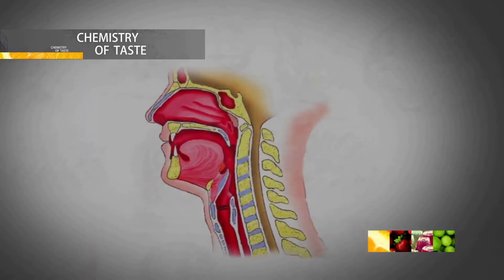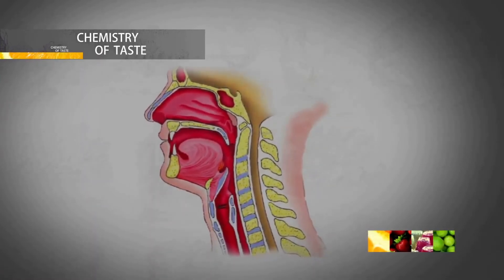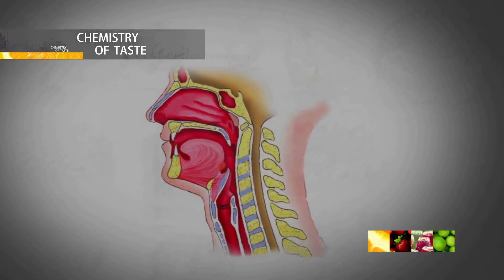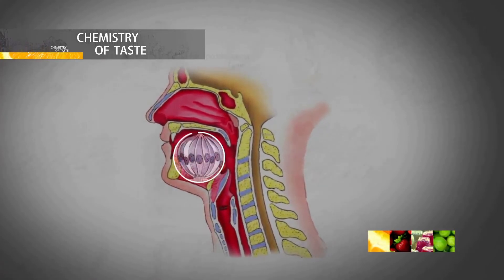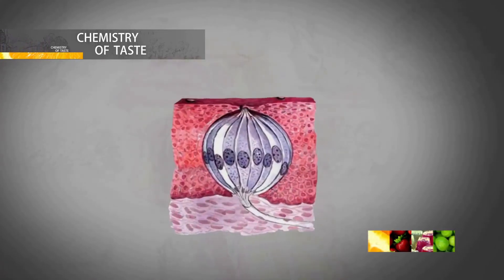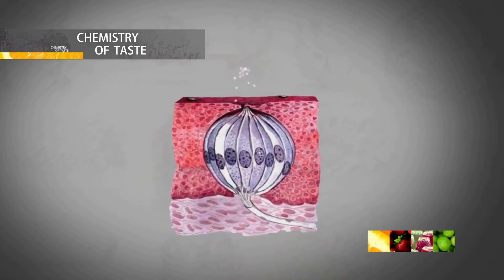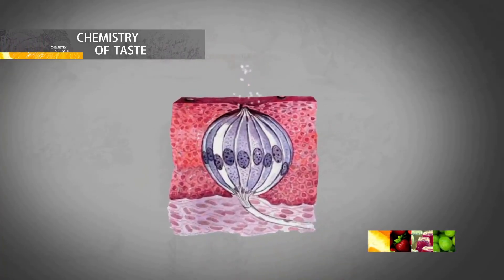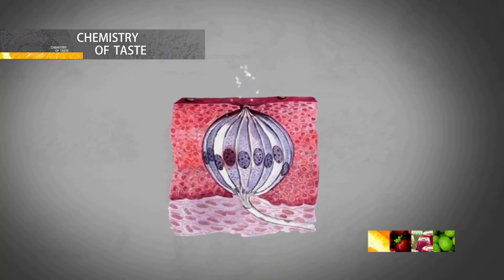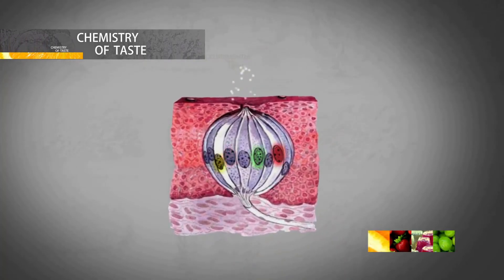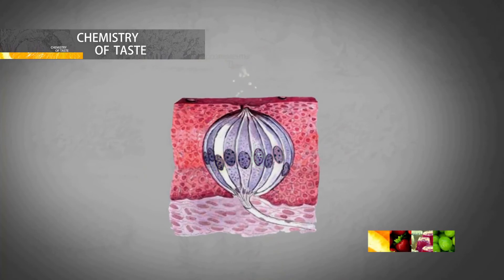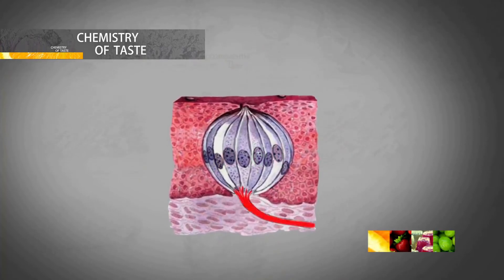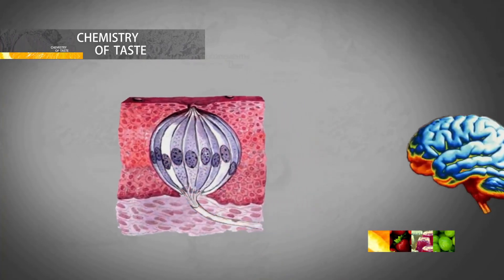When we eat or drink, various substances dissolve in the saliva and reach the so-called receiving section of a taste cell, the apical membrane. As a result of the interaction of the molecules with receptor proteins of the apical membrane, intracellular processes are launched, which activate the cell. Through synaptic contacts, the excitation is transmitted to nerve tissue and then to the brain — we feel the taste.